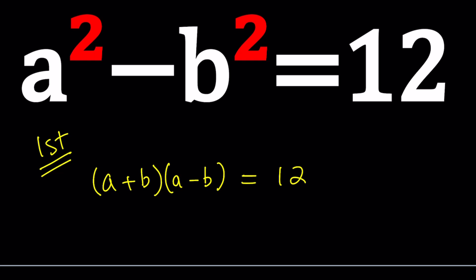Since A and B are integers, A plus B and A minus B are also integers. So from here, we can safely say that we are factoring 12. So what are some ways to factor 12?